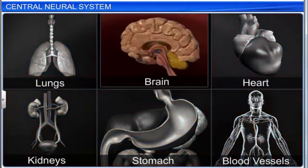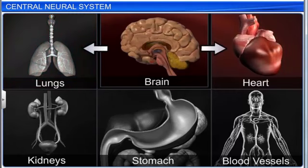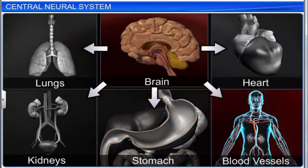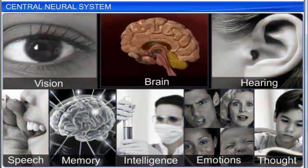It controls voluntary movement as well as the involuntary movement of organs such as the lungs, heart, kidneys, stomach, and blood vessels. It also controls the processes of vision, hearing, speech, memory, intelligence, emotions, and thought.